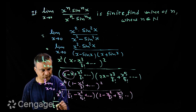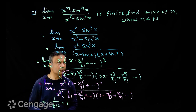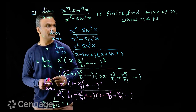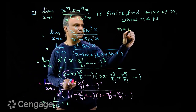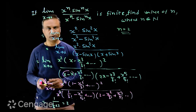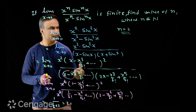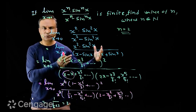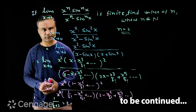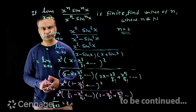When x tends to zero, the value becomes 1 over (1/6) multiplied by 2, which equals 3. This is a finite value. So for the limit to be finite, the value of n is equal to 2. For objective-type questions, we can simply try the values of n starting from 1, 2, 3 and identify which gives a finite result.